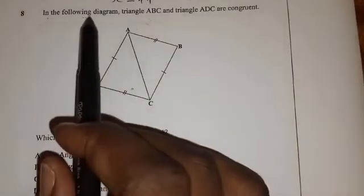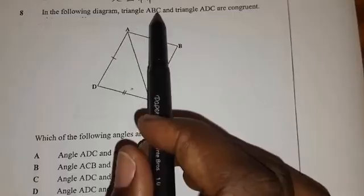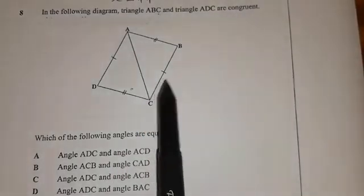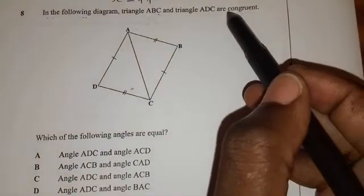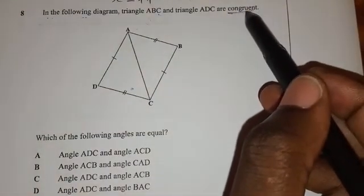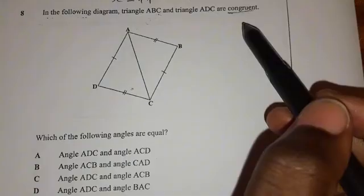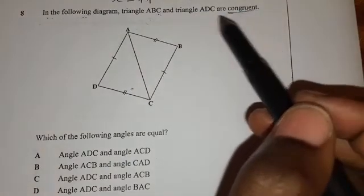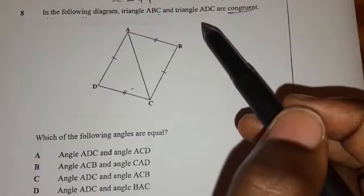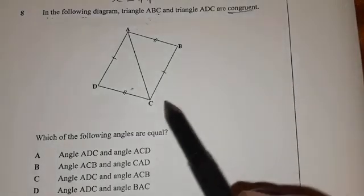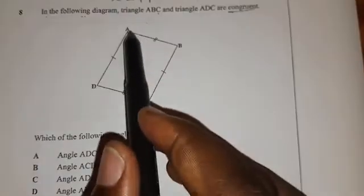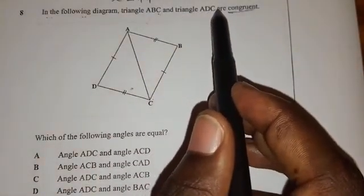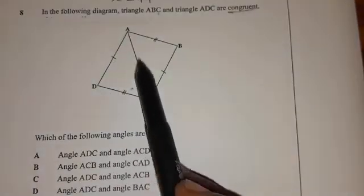Number eight, in the following diagram, triangle ABC and triangle ADC are congruent. So you have to understand that when they say congruent, it means those triangles or those shapes are equal. They are equal in length. They are also equal in angles. So they are saying triangle ABC and triangle ADC are congruent. So this triangle and this triangle are equal.